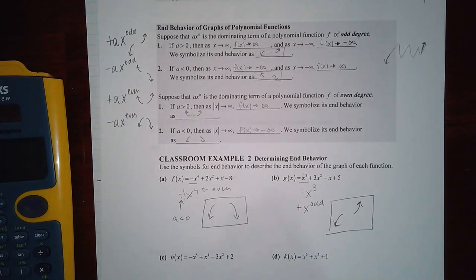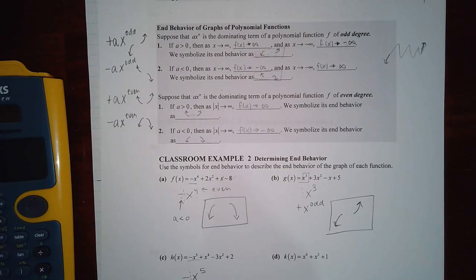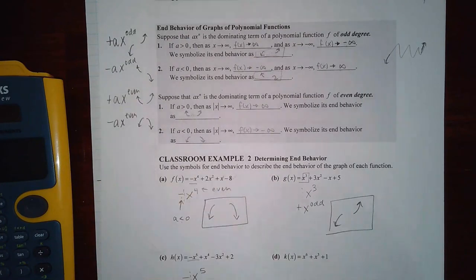Now we look at this one. This is the term with the highest. So negative x to the fifth. That's actually a negative x to the odd. And negative x to the odd should be looking like that.